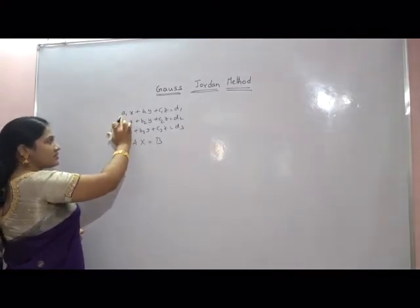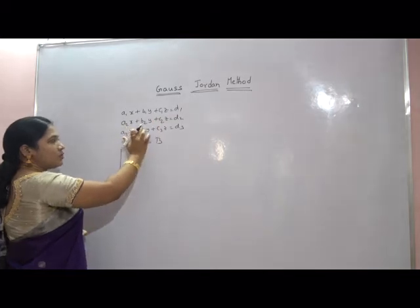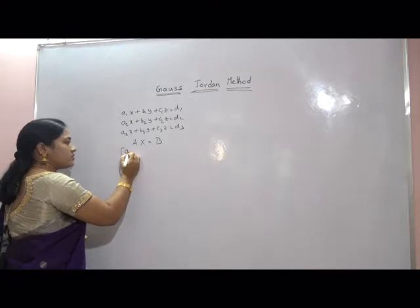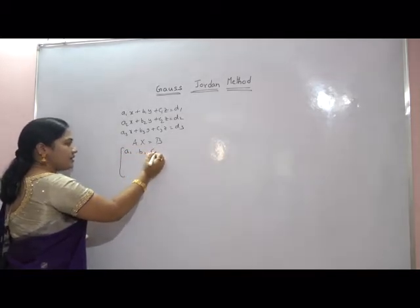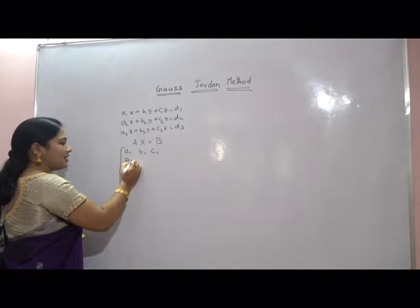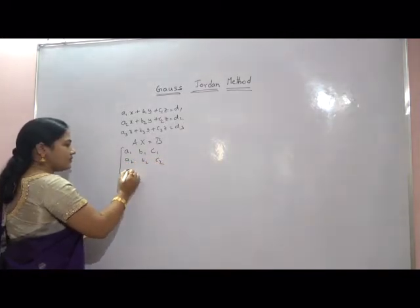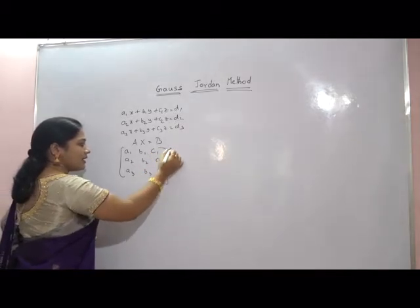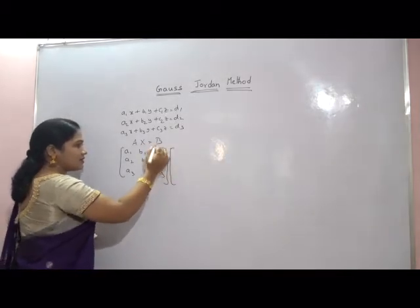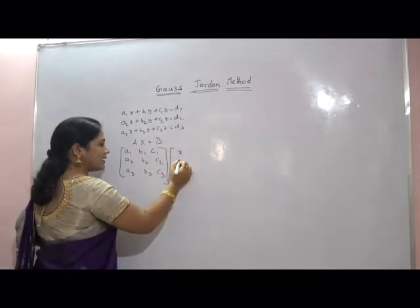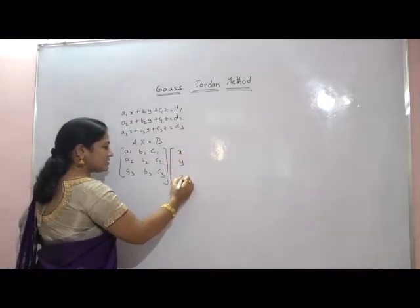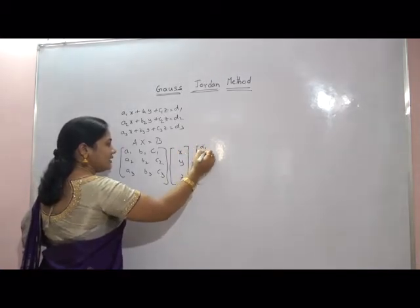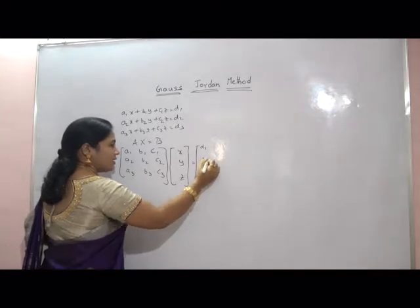The coefficient matrix A contains the coefficients A1, B1, C1 in the first row; A2, B2, C2 in the second row; and A3, B3, C3 in the third row. The unknown matrix X contains x, y, and z, and the constant matrix B contains D1, D2, and D3.